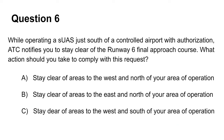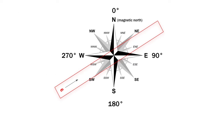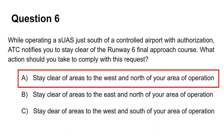The sixth question asks you to identify the actions that would comply with the ATC request for your drone operating south of the airport to stay clear of runway 6's final approach course. First, establish that runway 6 will face 60 degrees from southwest to northeast. The final approach will be a path facing 60 degrees in the southwest area. You are told that the drone is being operated just south of the airport. To comply with the ATC request, you must stay clear of areas that are north and west from where you are, which makes A the answer.